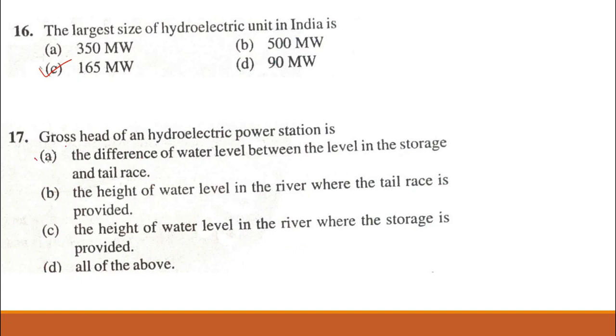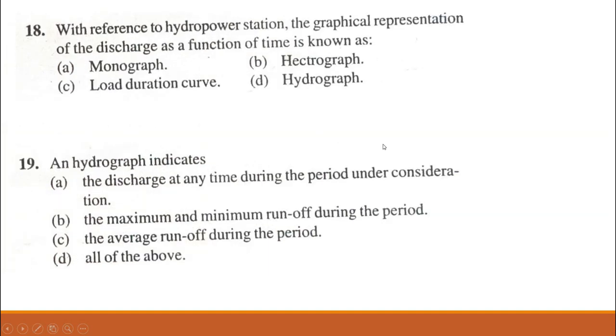Problem 18. With reference to hydroelectric power station, discharge as a function of time is known as: monograph, hectograph, flow duration curve, or hydrograph. Hydrograph gives the relation between time and discharge Q. Problem 19. The hydrograph indicates: discharge at any time, maximum and minimum runoff, and average runoff during the period. All three are correct. The answer is all of the above.